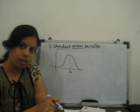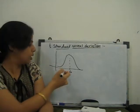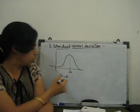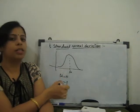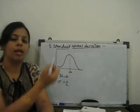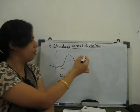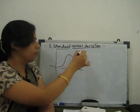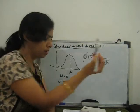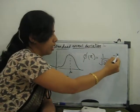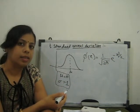Now if we talk about the standard normal distribution: for standard normal distribution, if we put mean μ equal to 0 and standard deviation equal to 1, then our normal distribution converts into standard normal distribution. The standard normal probability density function is given by 1 over root(2π) times e to the power of minus x² over 2, where mean equals 0 and sigma equals 1.